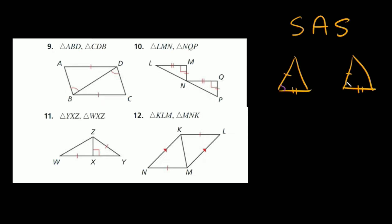...so that would be this angle right here. If you have two sides that are congruent and the angle in between them is also congruent, then the two triangles are congruent. And remember, congruent just means that they're the same — the exact same.